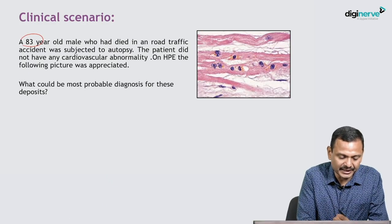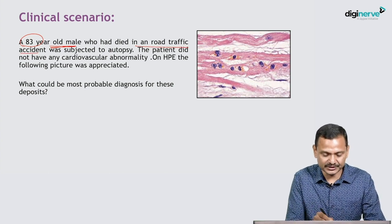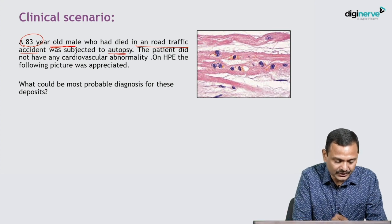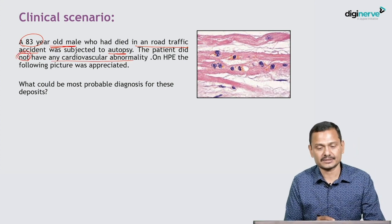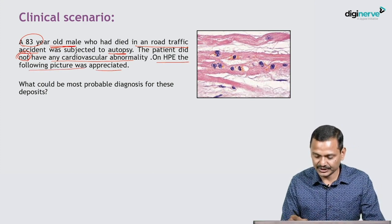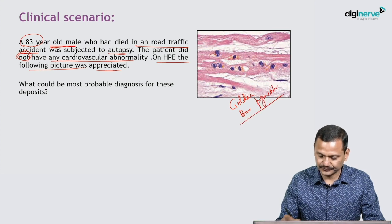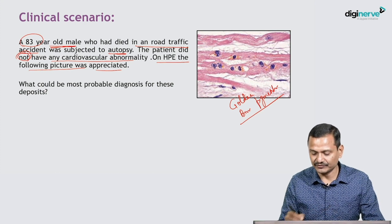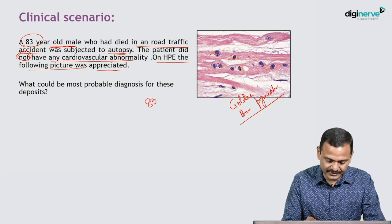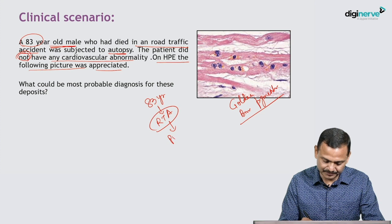We move on to our third clinical scenario. Here is an 83-year-old male who died in a road traffic accident and was subjected to autopsy. The patient had no cardiovascular complaints at all. On HPE, the following picture was appreciated — you can see some golden-brown kind of pigments. These pigments could be hemosiderin again, or it could be lipofuscin. Lipofuscin is known as the wear-and-tear pigment and is normally deposited in the heart, liver, and certain other tissues, and is seen with old age.